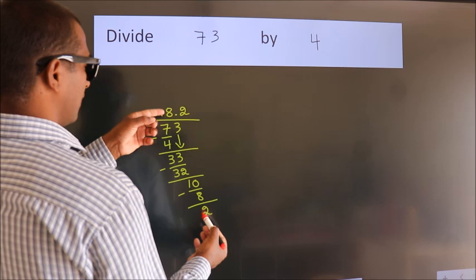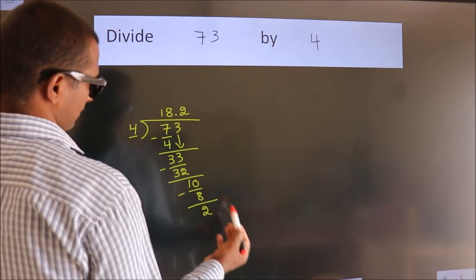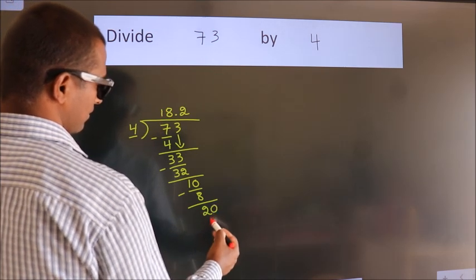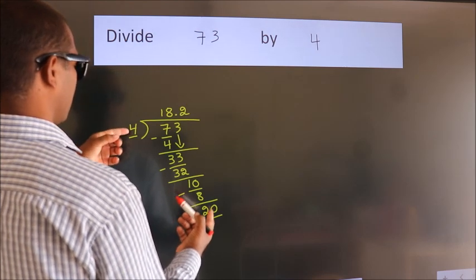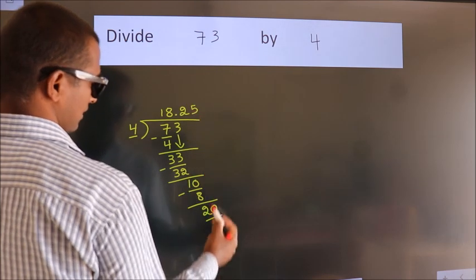After this, we already have the decimal, so directly take 0, making 20. When do we get 20 in the 4 table? 4 times 5 is 20.